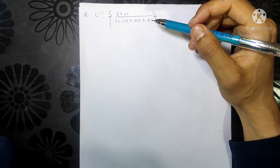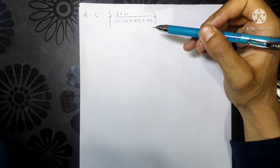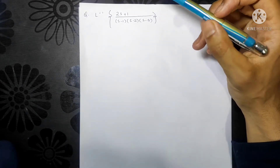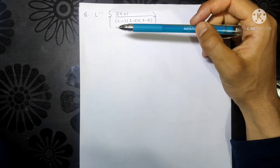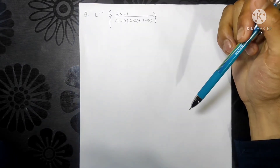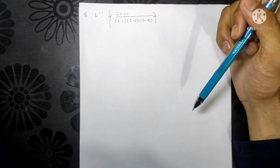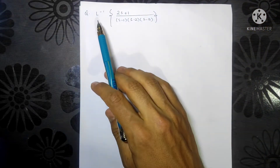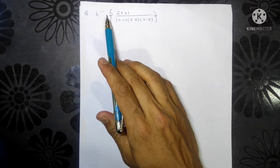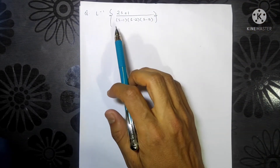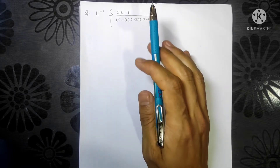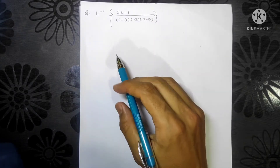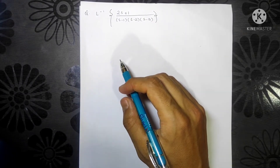Hello students, welcome back to Engineering Mathematics. Today we are going to solve one of the questions on Laplace inverse transformations. This question was asked by one of the subscribers. The question says: find the Laplace inverse of (2s + 1) divided by (s minus 1)(s minus 2)(s minus 3).